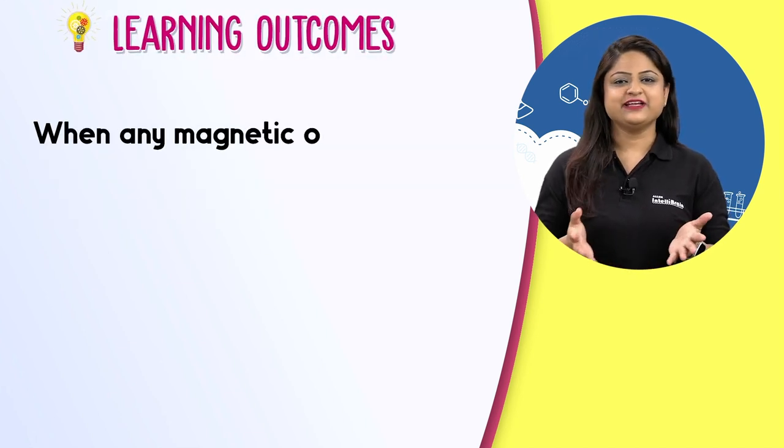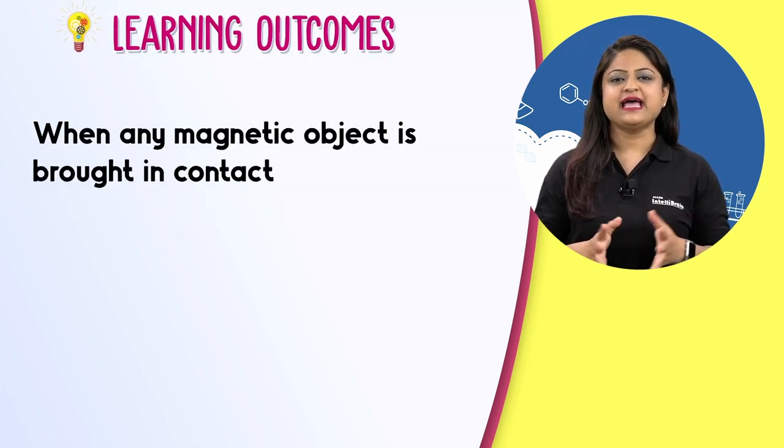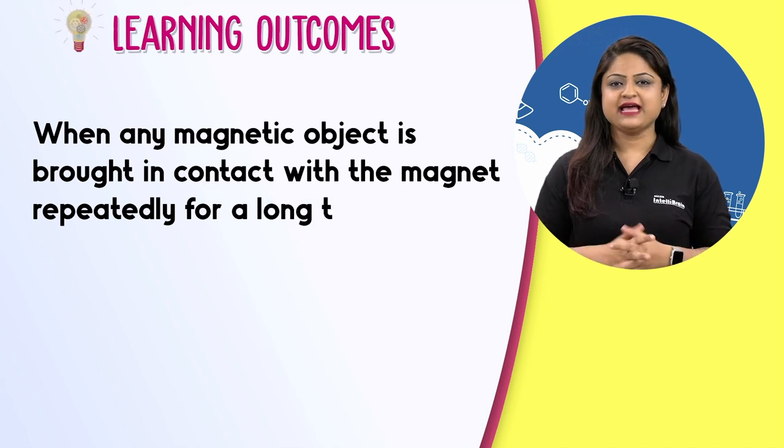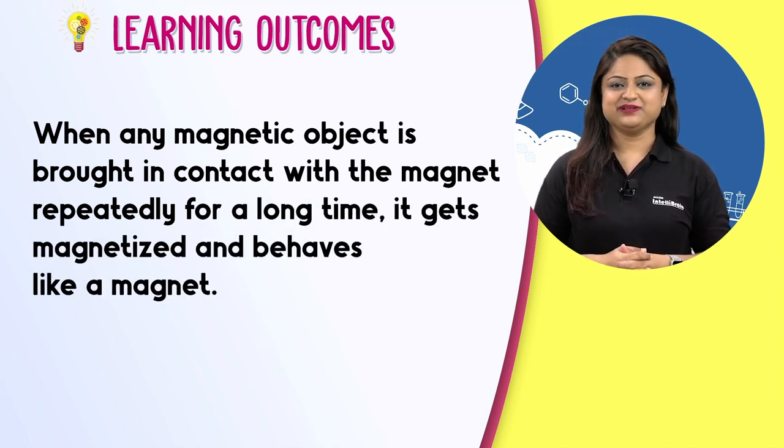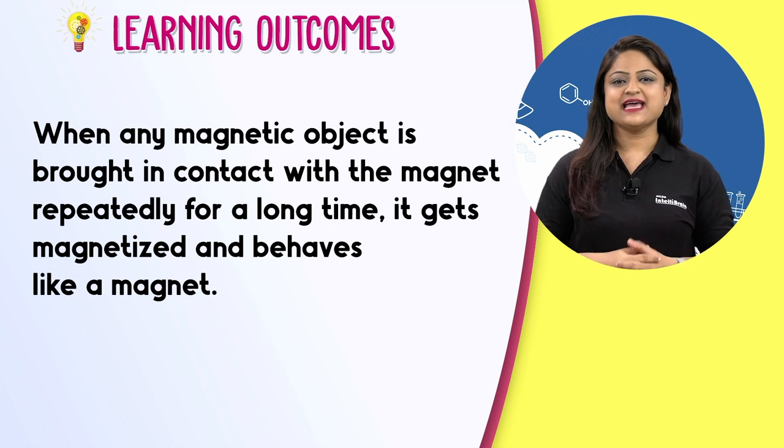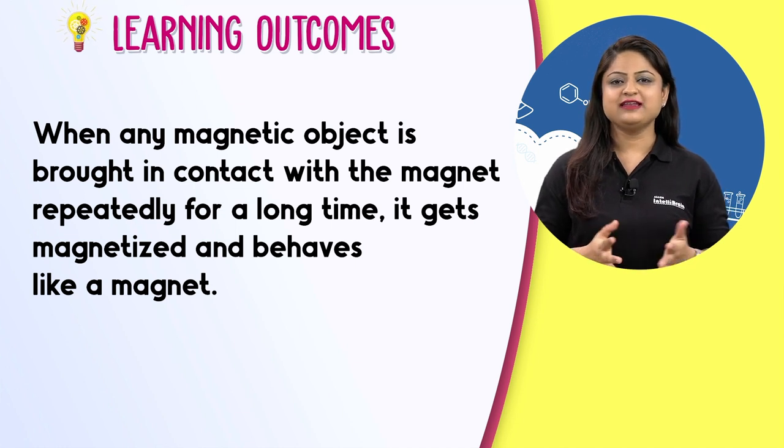When any magnetic object is brought in contact with a magnet repeatedly for a long time, it gets magnetized and behaves like a magnet. Visualize science with IntelliBrain and fall in love with learning.